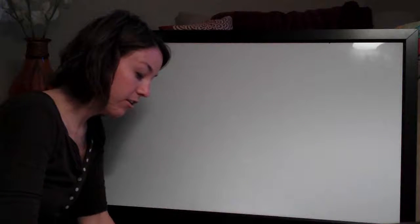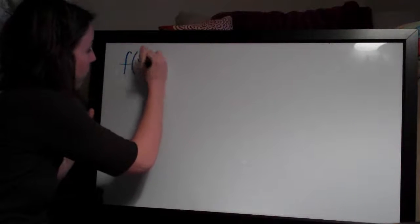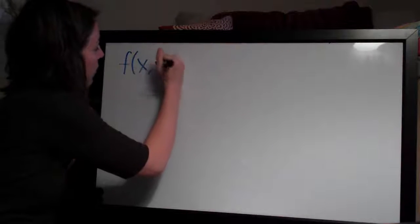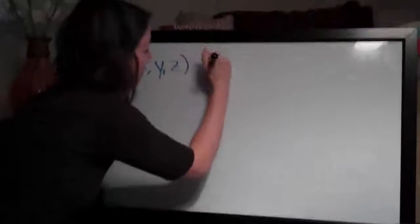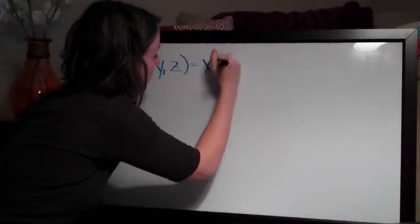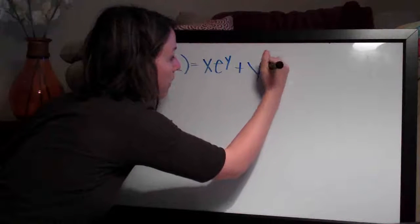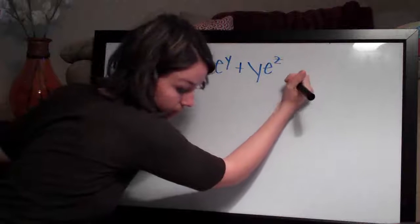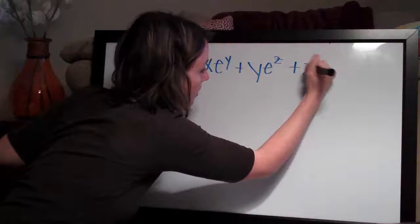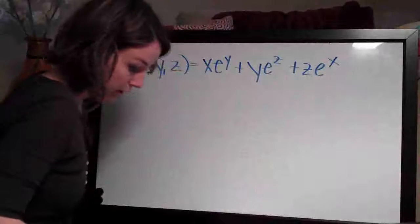We're going to go ahead and do another partial derivative problem. This one looks like the following: f equals x e to the y plus y e to the z plus z e to the x.